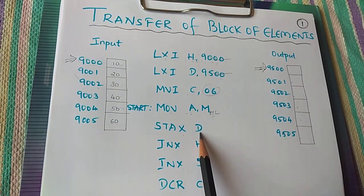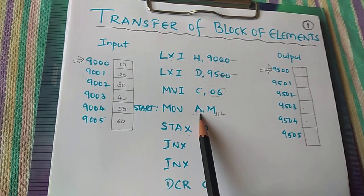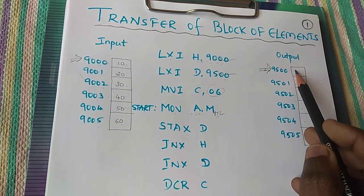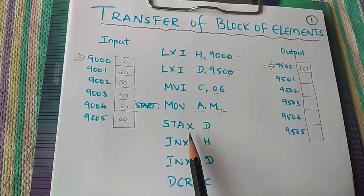Then STAX D means the contents of accumulator, that is 10, will be moved to 9500 using the instruction called as STAX D.